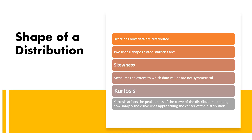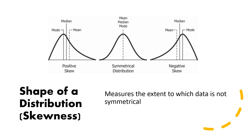Next we look at the shape of distribution. Two useful shape-related concepts in statistics are skewness and kurtosis. Skewness measures the extent to which data values are not symmetrical. Kurtosis is affected by the peakedness of the curve — how sharply the curve rises. Skewness can be positive or negative. When the graph is positively skewed, the median is greater than the mean; when negatively skewed, the median is less than the mean.